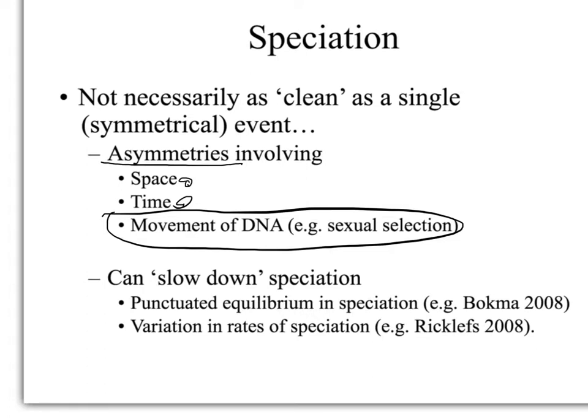With modern techniques, we can get DNA and phylogenies for any group of organisms that we want. What we seem to find is evidence of punctuated equilibrium — periods of rapid speciation and then other periods of very slow speciation. We also find variation in the rates of speciation: some groups of organisms speciate very quickly, while others speciate very slowly. Some of this variation could be due in part to asymmetries in speciation.